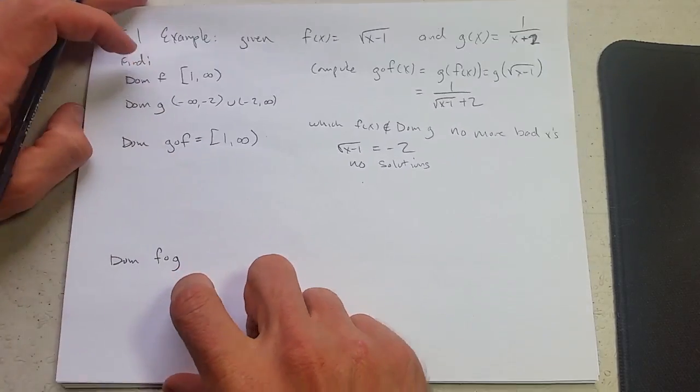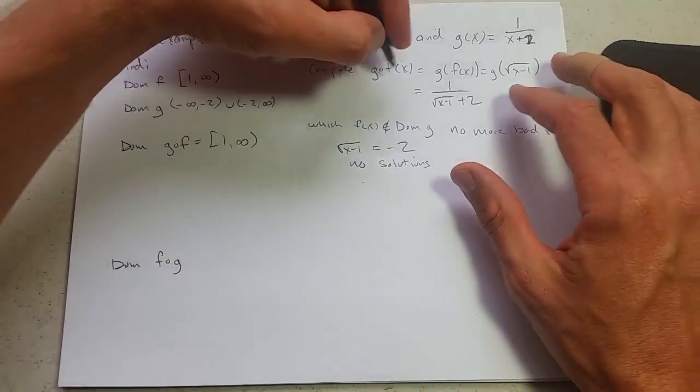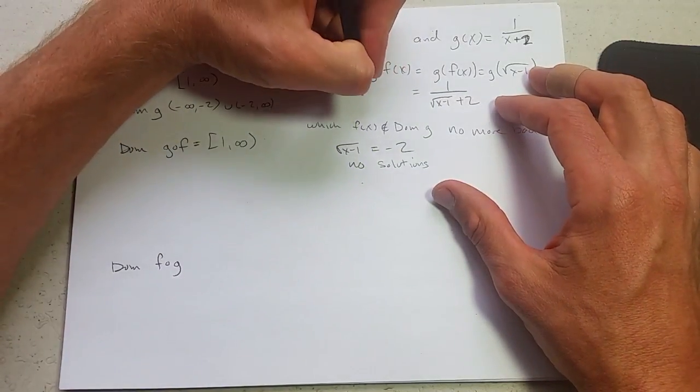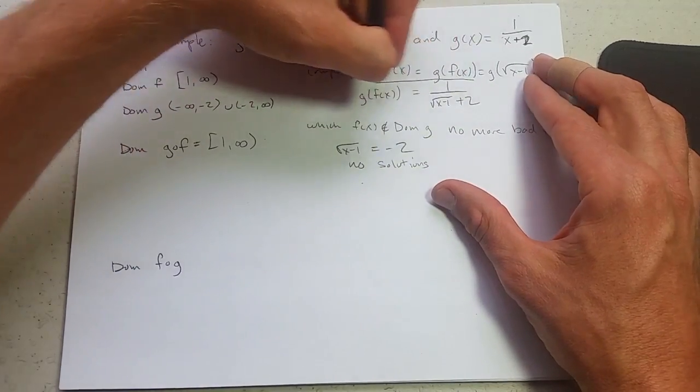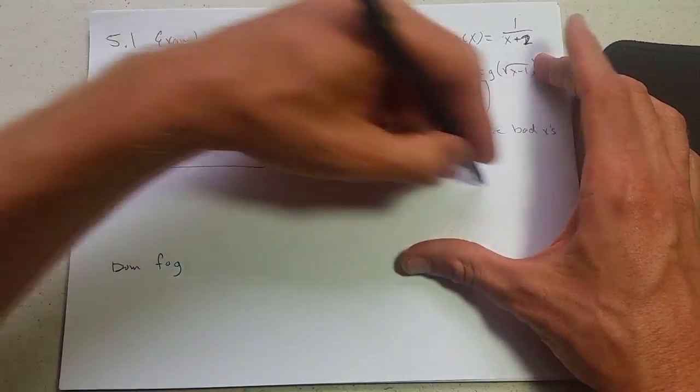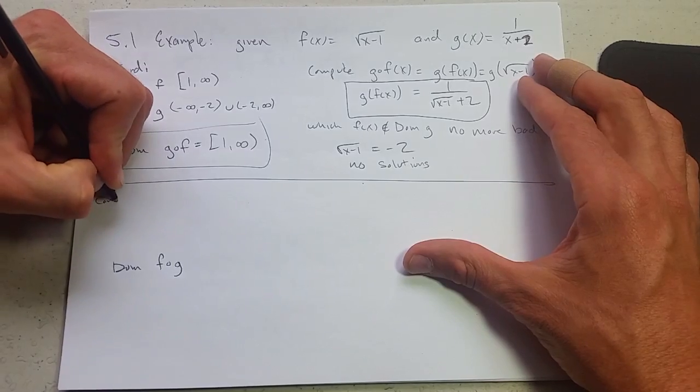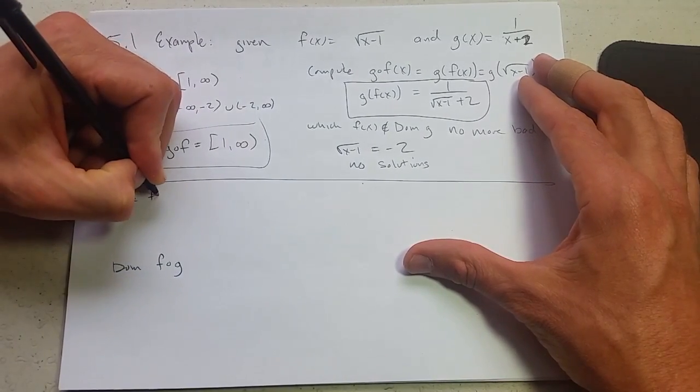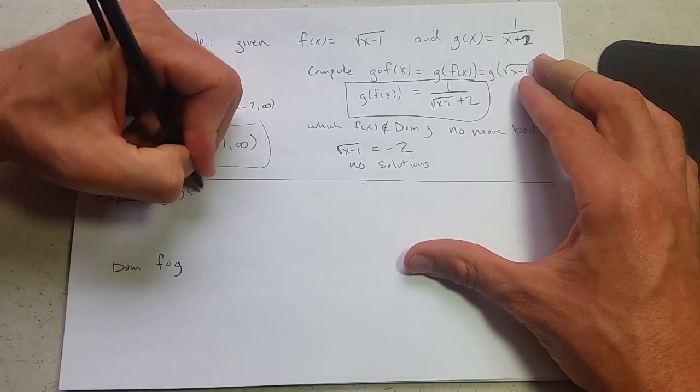Now we're going to look at domain of f of g. And this is g of f right here. So we computed it right there and we got the domain. So now let's go ahead and compute f of g of x.